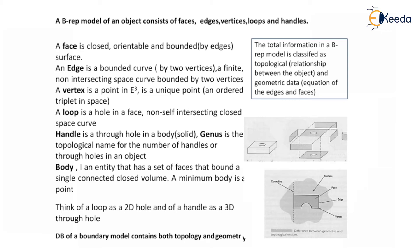What is a face? A face is closed or orientable and bounded by edges of a surface. An edge is a bounded curve — a finite non-intersecting space curve bounded by two vertices. A vertex is a unique point in E-cube, an ordered triplet in space. A loop is a non-self-intersecting closed space curve — essentially a hole in the face. A handle is the through hole inside a body or solid. Genus is the topological name for the number of handles or through holes in an object.